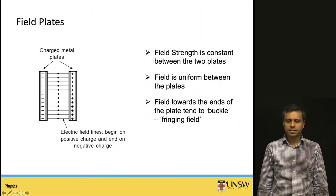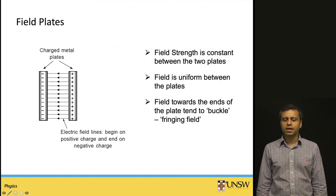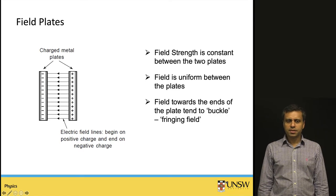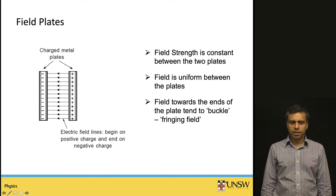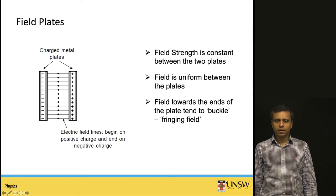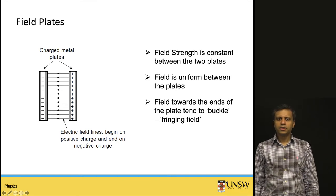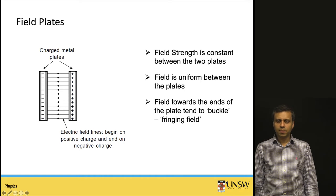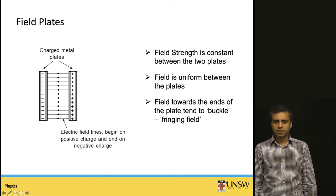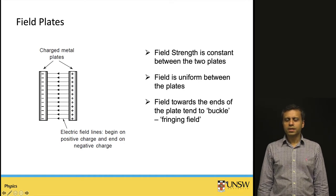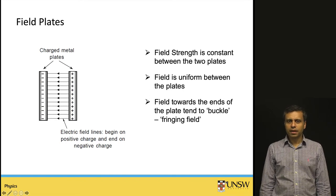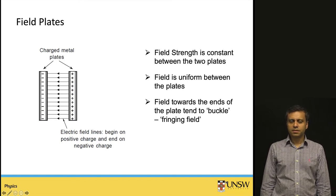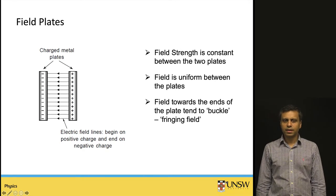The system consists of two plates, one positively charged and the other negatively charged. The field lines go from the positively charged plate to the negatively charged plate, and they are uniform and parallel. The electric field between the plates is uniform — it's a constant. But towards the ends of the plates, the field lines buckle due to fringing fields present near the edges.